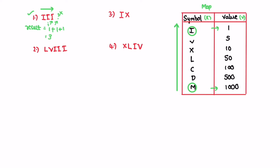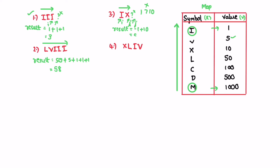For LVIII, iterating left to right gives us L=50, V=5, I=1, I=1, I=1, totaling 58. Now for the important subtraction case: when we check i pointing to X (value 1) and j pointing to X (value 10), the condition value[i] >= value[j] is not true. So we subtract the value at i from our result, giving minus 1. Then outside the loop we add the last symbol's value of 10, giving us 9.